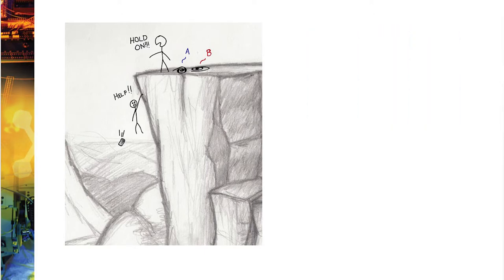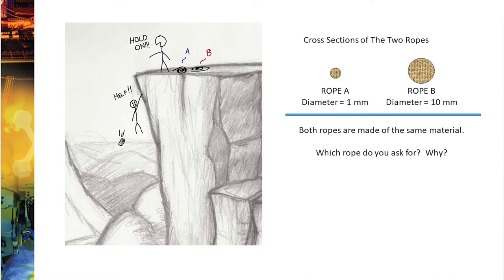Now luckily for you, I walk by at this exact moment and you say, 'Oh my god, Mike, you're my S102 instructor, please help me.' And I'm about to reach down and grab you and I go, 'Wait a minute, this is a perfect teachable moment.' So here we go. I've got two ropes here: Rope A and Rope B. Rope A has a diameter of 1 millimeter and Rope B has a diameter of 10 millimeters.